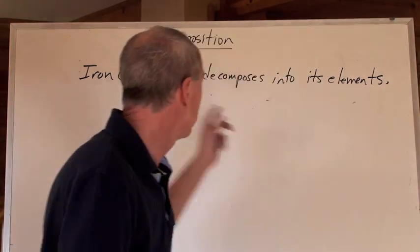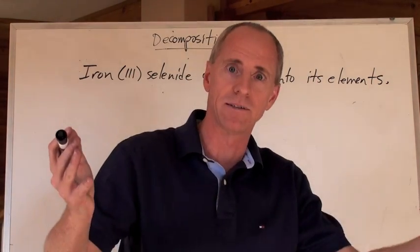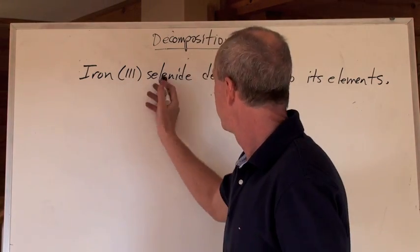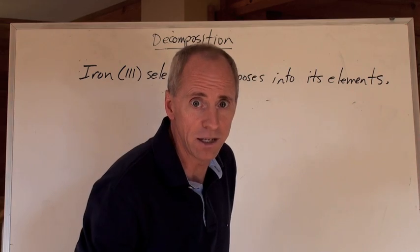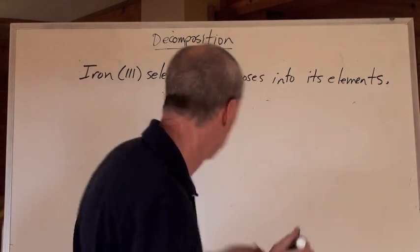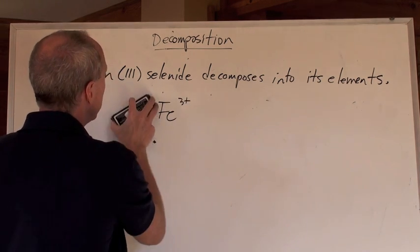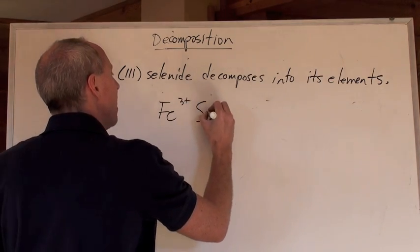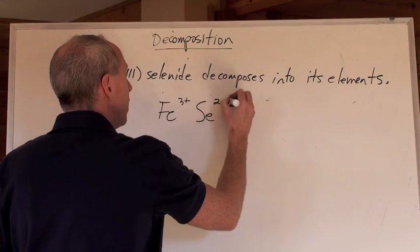Iron(III) selenide decomposes into its elements. This is the compound you've got to break down, so let's write the formula. Iron(III) — you know iron is Fe, and since it says 3, you know which charge to use. So it's going to be Fe with a 3+ charge, and it's going to come together with selenide — on the periodic table that's Se. Check the charge in group 16 or 6A: it's 2 negative.